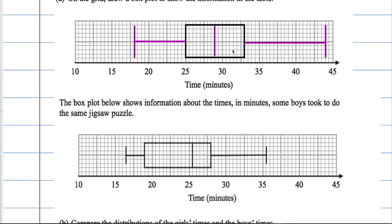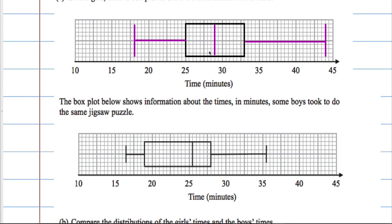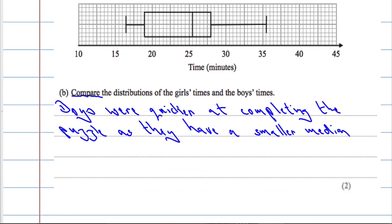But we can see that the girls are more consistent because their data is less spread out because they have a smaller interquartile range. The interquartile range is smaller, which means that the data is less spread out. So we can say the girls' times are more consistent, or you can say less varied, as they have a smaller interquartile range.